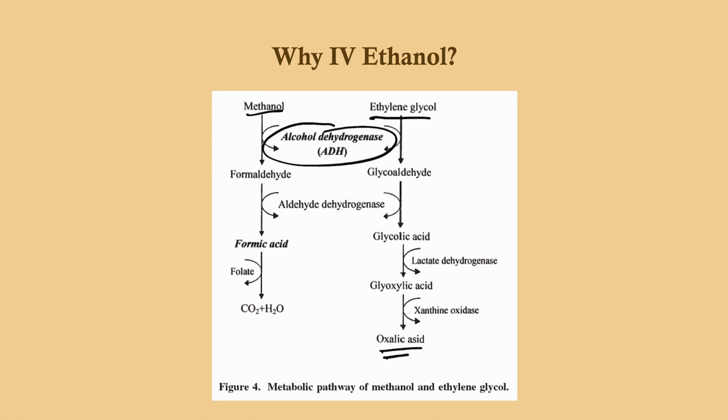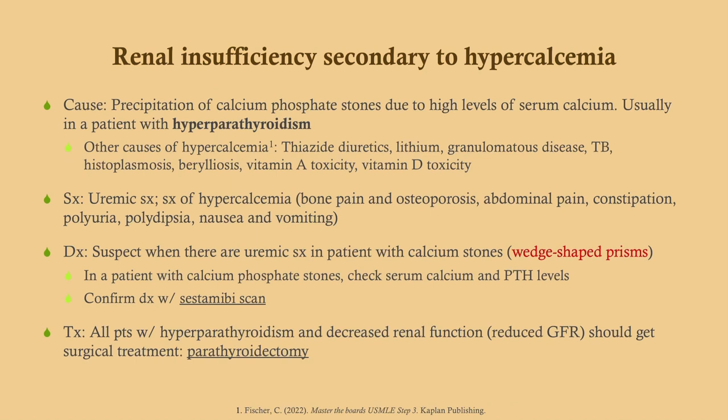Renal insufficiency secondary to hypercalcemia is usually due to hyperparathyroidism, but also from thiazide diuretics, lithium, or granulomatous diseases such as sarcoidosis, TB, or histoplasmosis. Remember the mnemonic: stones, bones, moans, and psychiatric overtones. Urinalysis may reveal small stones. If a patient has calcium phosphate stones, work them up for hyperparathyroidism — get serum calcium and PTH. In primary hyperparathyroidism, expect elevated calcium and elevated PTH; confirm with sestamibi scan and refer to surgery.